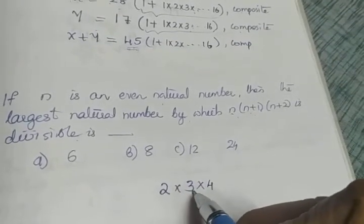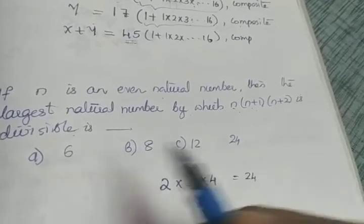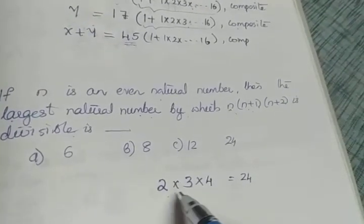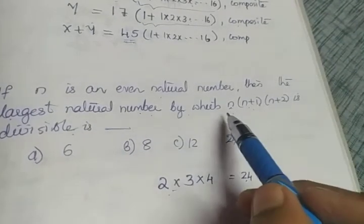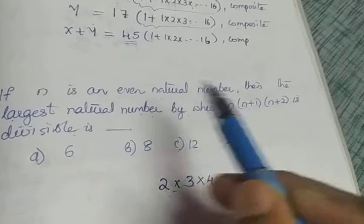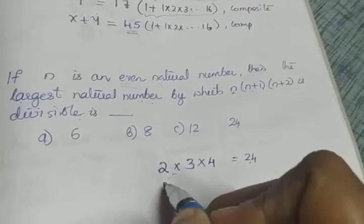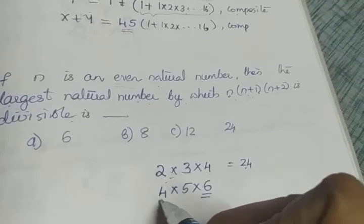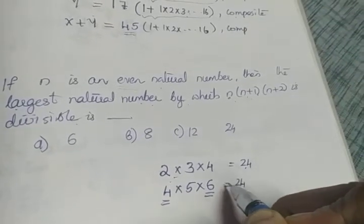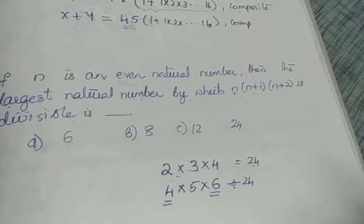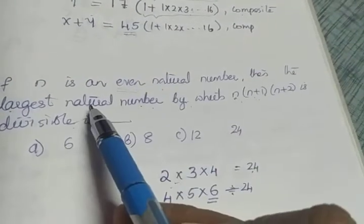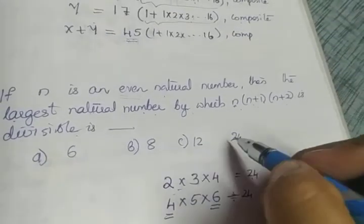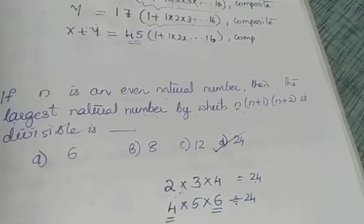So 2×3×4 = 24. We need the largest natural number that divides this product. Testing n=4: 4×5×6 = 120, which is also divisible by 24. Since n cannot be odd (it must be even), and both test cases are divisible by 24, the largest such natural number is 24. The answer is option D.